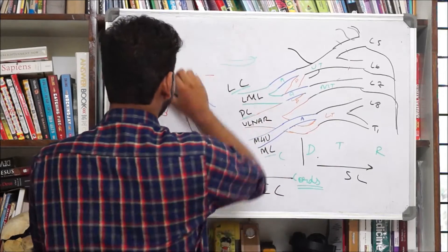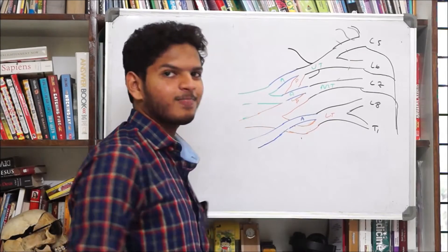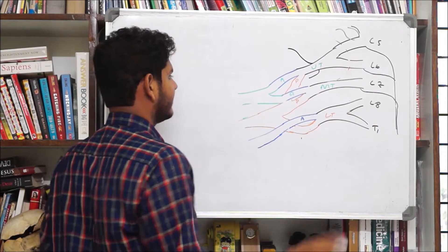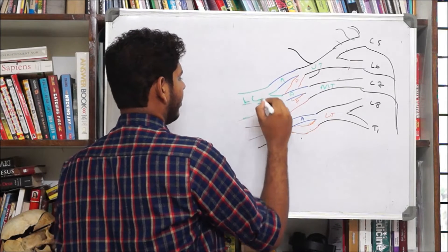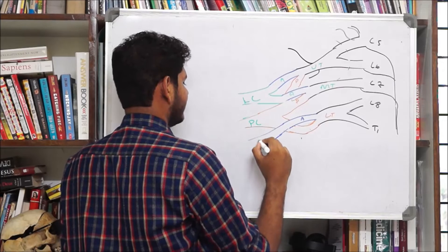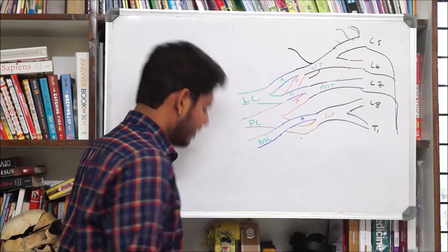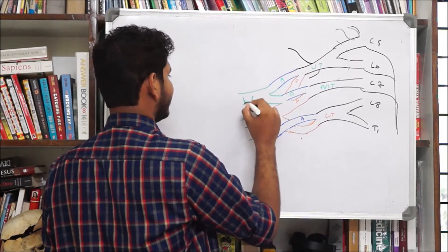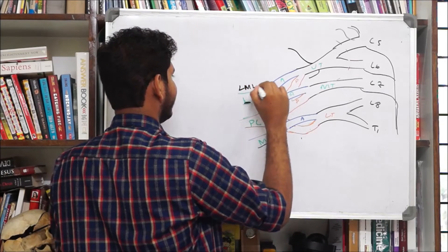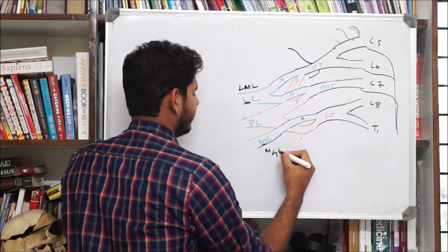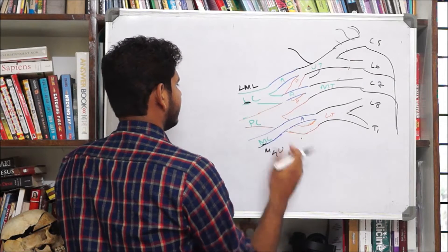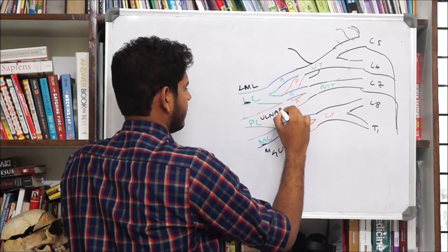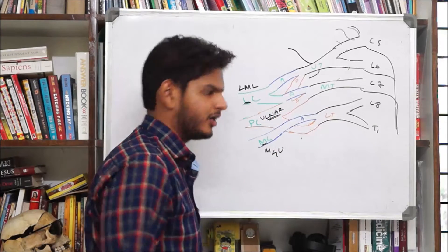Let me clean the diagram a little bit. So now that I have cleaned it up, let me relabel it — this is the lateral cord, this is the posterior cord, and this is the medial cord. Mnemonics fast. Everybody knows that lateral starts with L, so it is L, M, L. This starts with M, so this is M for U, and the posterior, which is not anything, it is the ulnar.